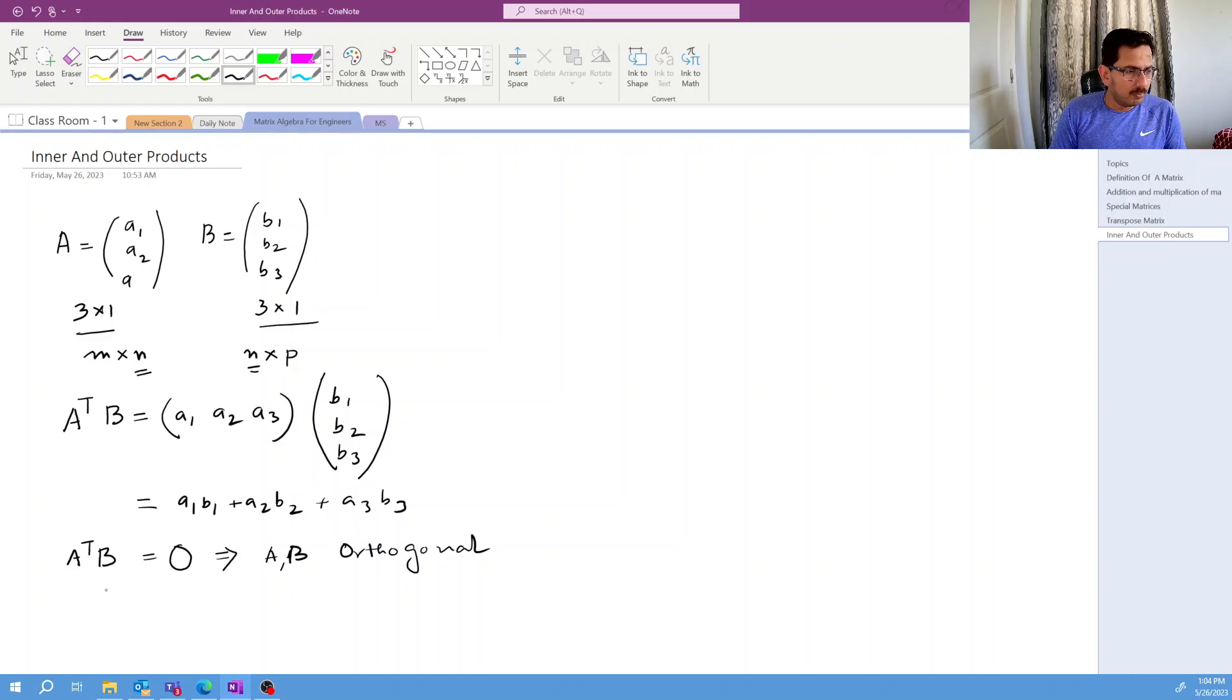And another thing is norm. This is another terminology which you should be familiar. What is this? The norm of a vector means, so what will happen if you do the A transpose, that means this one and along with this, if you multiply A, so basically your result will be a1 square plus a2 square plus a3 square, and then we have a square root. So this is the norm of a vector.